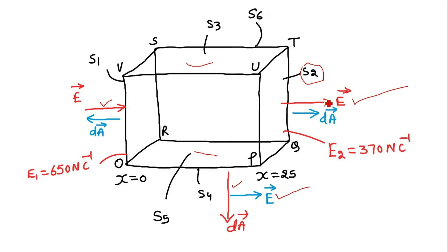For the face S2, electric field and area vector are in the same direction. So the angle between the electric field and area vector for S2 will be 0 degrees because area vector is always directed toward the outward normal.